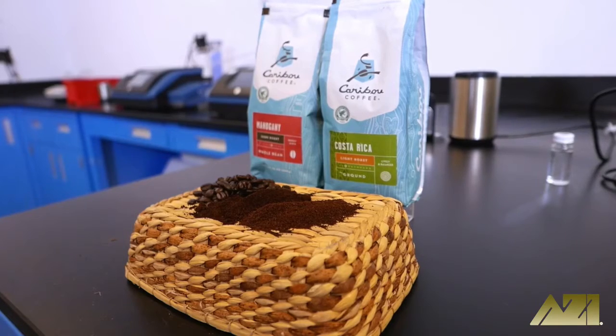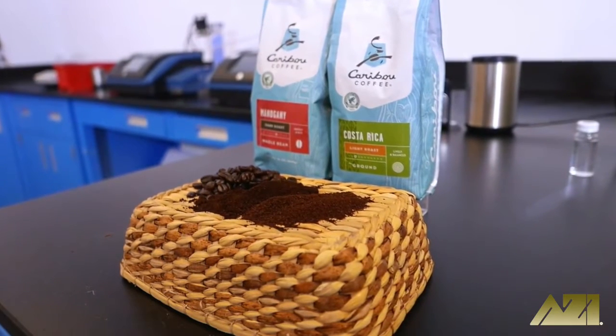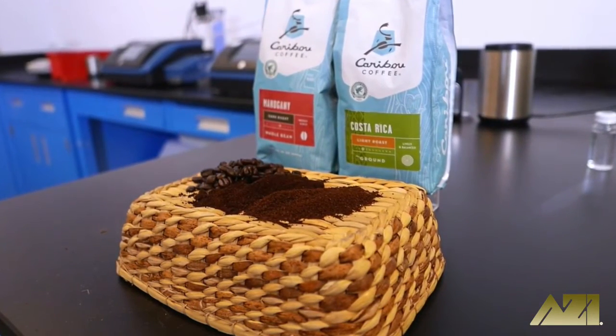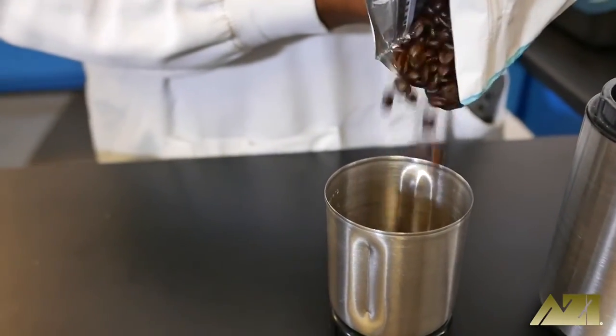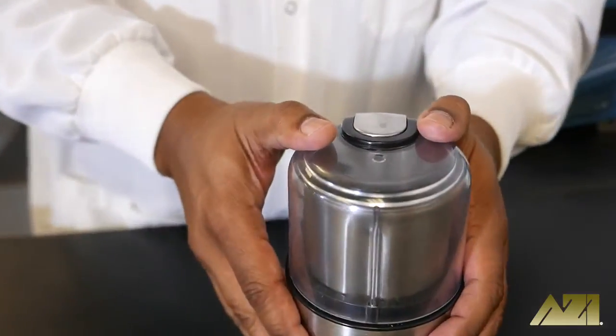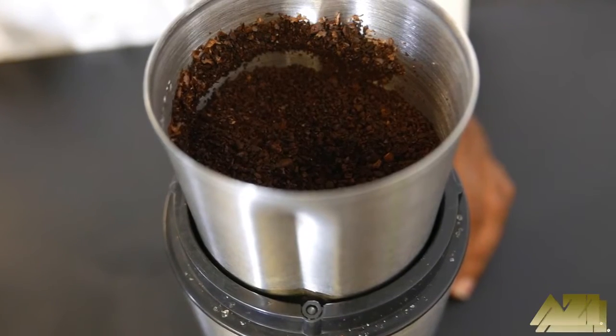For today's test, we're using store-bought light and dark roast coffee of the same brand. One was ground and one was whole bean. The whole bean variety was ground before testing to increase the surface area of the sample. This allows any moisture to be driven off more quickly and efficiently as the sample is heated.